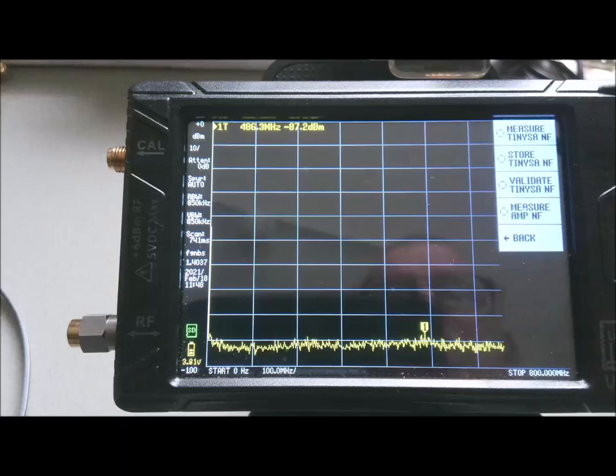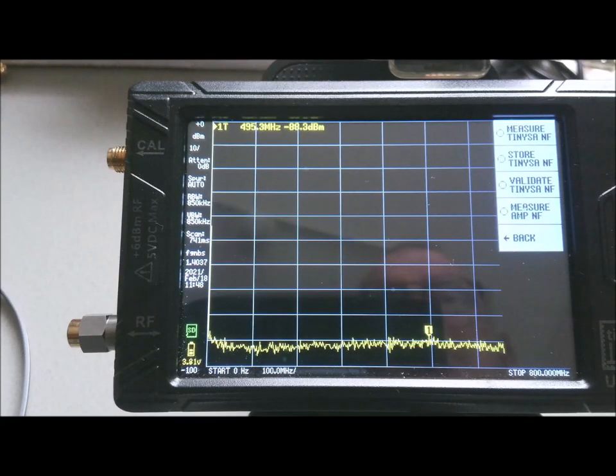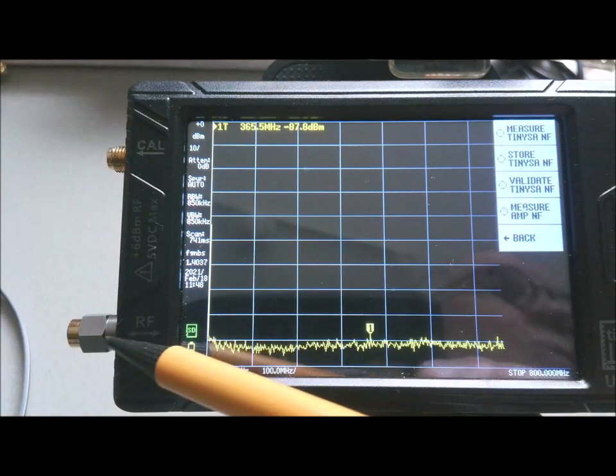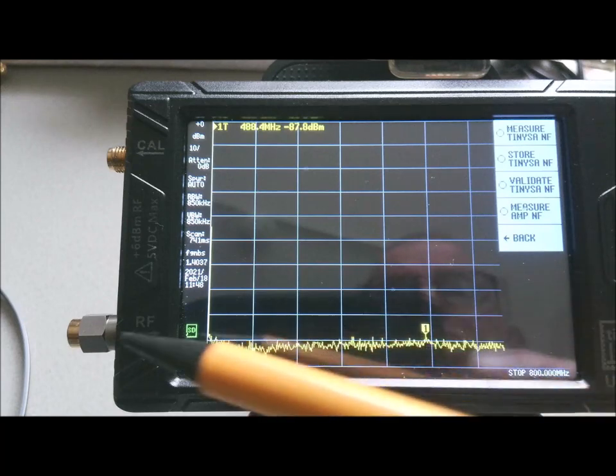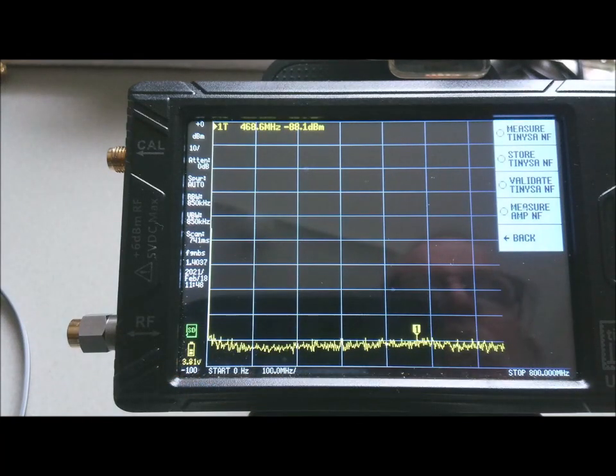To measure the noise figure of the TinySA itself, because it has to be removed from the noise it sees from the amplifier, you have to connect a 50 ohm load to the input of the TinySA. And this is because the noise generated in the low noise amplifier of the TinySA depends on the impedance it sees at its input. So it's crucial that you have this 50 ohm load at the input.